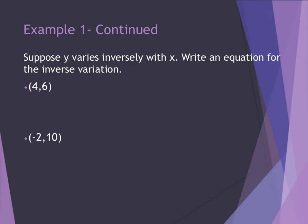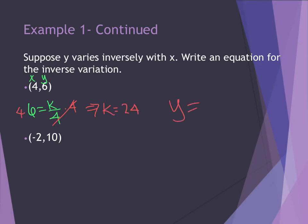This is the second part of example 1. I'm now given a coordinate point instead of being told directly that x equals this and y equals that. The first number in a coordinate point is your x value, the second one is the y. So I have 6 equals k divided by 4. I multiply both sides by 4, and this gives me k equal to 24, or y equals 24 divided by x.